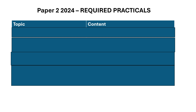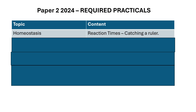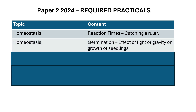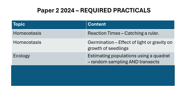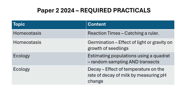Don't forget the required practicals — they come up every single year, even if they were in the paper last year. These can all be found on my YouTube channel and doctorbiology.uk website. The ones to focus on: reaction time, germination (looking at the effect of light or gravity), estimating populations using a quadrat (both random sampling and transects), and decay (the effect of temperature on the rate of decay of milk by measuring pH change).